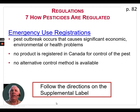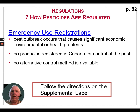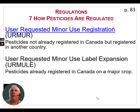Emergency use registrations: if a pest outbreak occurs that causes significant economic, environmental, or health problems, and there is no product registered in Canada for controlling that pest and no alternative control method is available, then an emergency use registration may be issued. An example is that organic field producers received an emergency registration for a product to control cucumber beetles back in 2014.